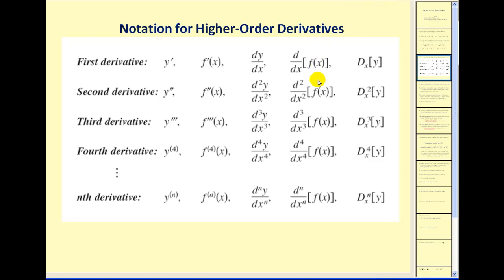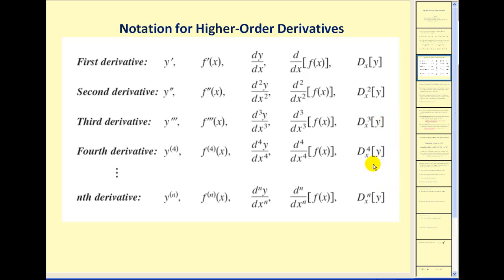There's a variety of notation used for higher order derivatives. The first row represents the first derivative, the second row would be the second derivative, and so on. You may want to pause the video here and take a look at all the different notations that can be used.